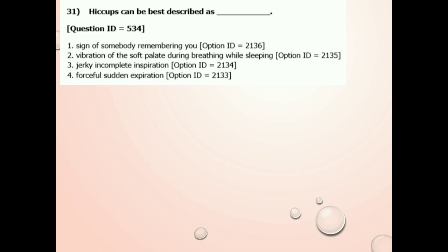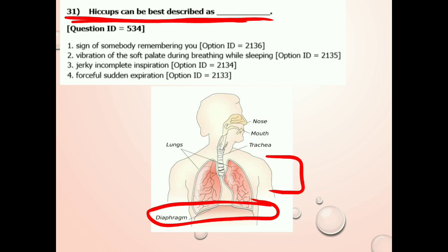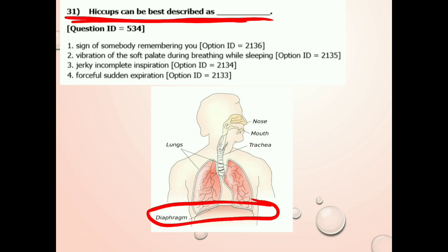Question number 31: Hiccups can be best described as? Hiccups — what we are talking about is 'hitchki'. In your body there is a muscle that we call the diaphragm. It is present between the lungs and stomach, separating the chest cavity from the stomach.